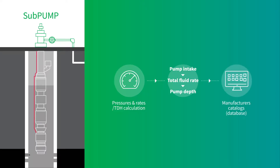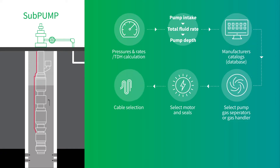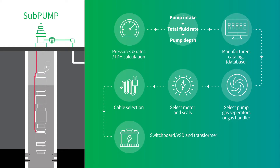From within the manufacturer's catalog information, Subpump has the option of auto-selecting equipment. Equally, Subpump gives you freedom to choose the equipment according to your own criteria. An option for selecting surface equipment such as switchboard, VSD, and transformer is also available.